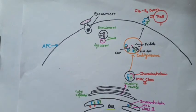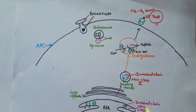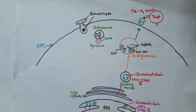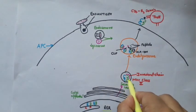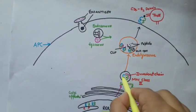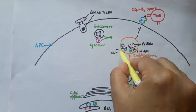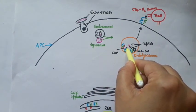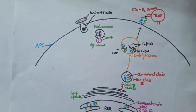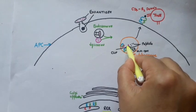Simultaneously, the assembly of alpha and beta chains takes place in the rough endoplasmic reticulum. After assembly, the invariant chain binds to the MHC class 2 molecule at the peptide binding site. This MHC class 2 molecule along with the invariant chain goes to the Golgi apparatus, where a secretory vesicle is pinched off containing the MHC class 2 molecule and invariant chain. This vesicle combines with the peptide-containing endolysosome. In the endolysosome, the invariant chain is first digested into a small segment called CLIP — class 2-associated invariant chain peptide.